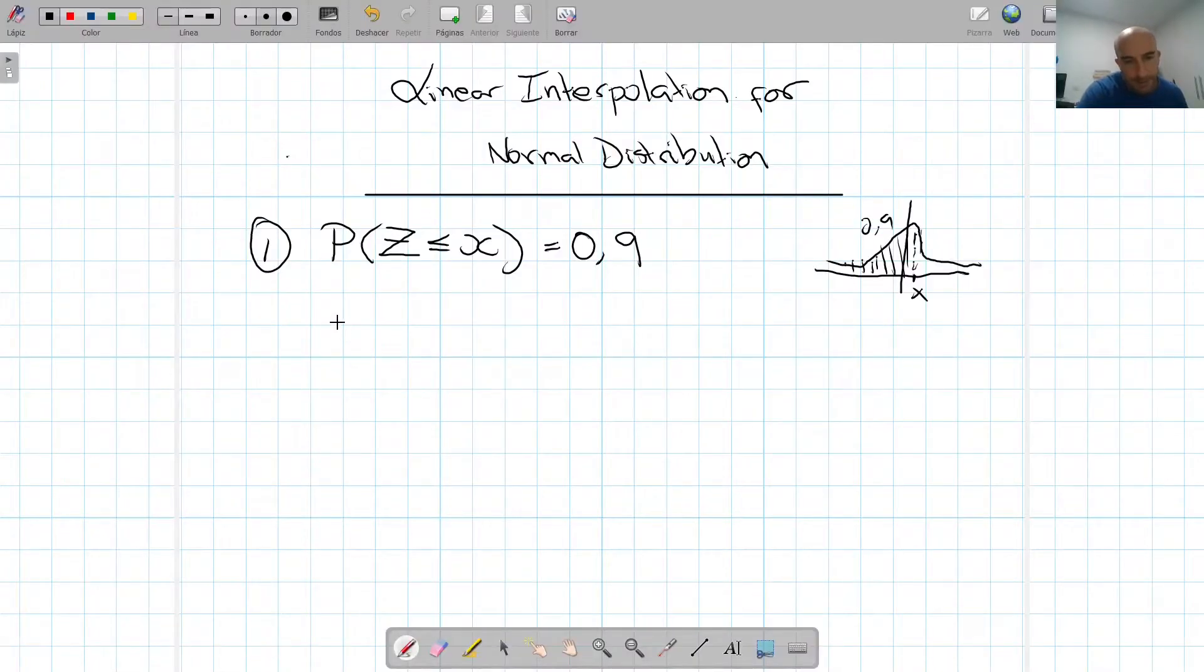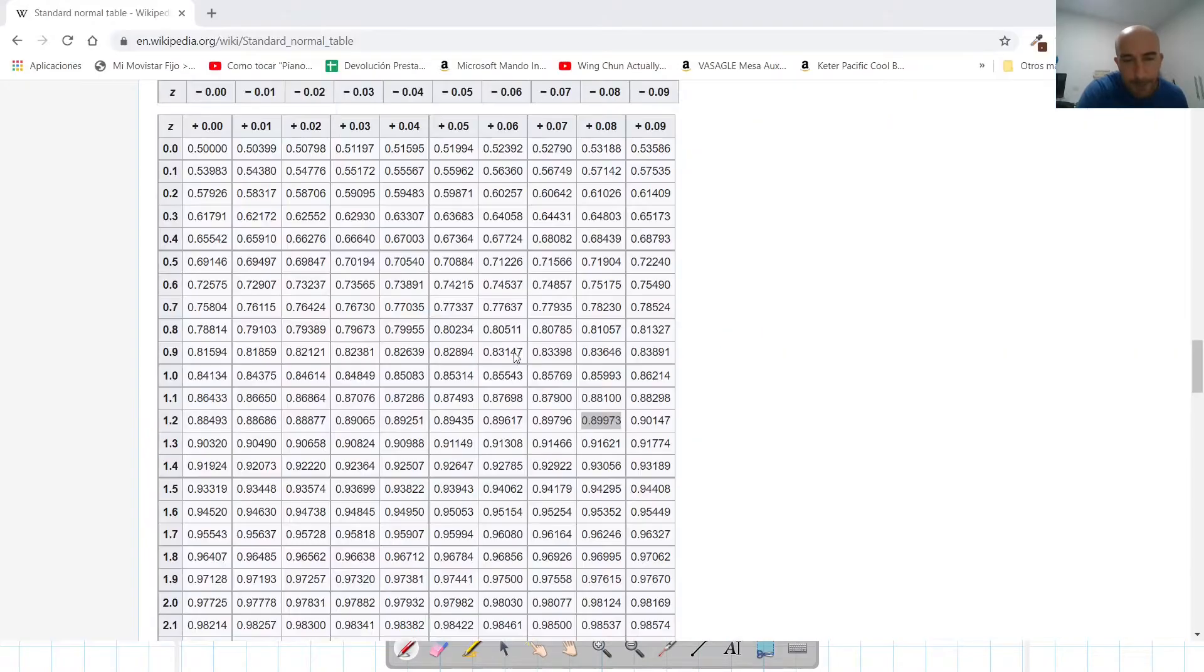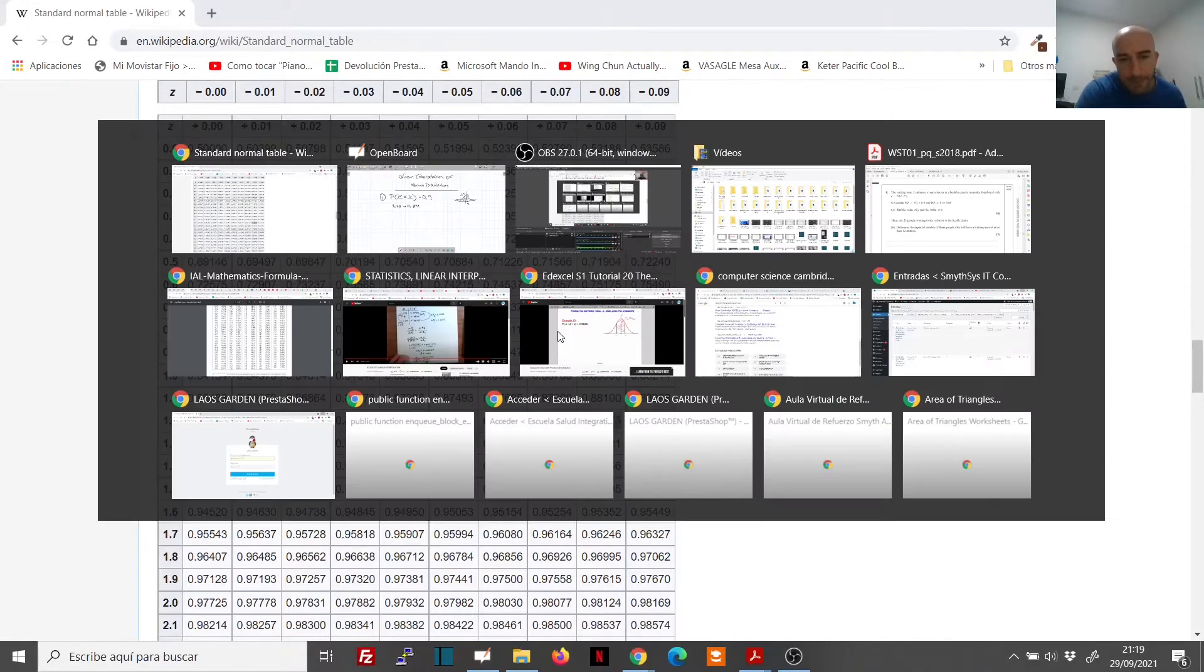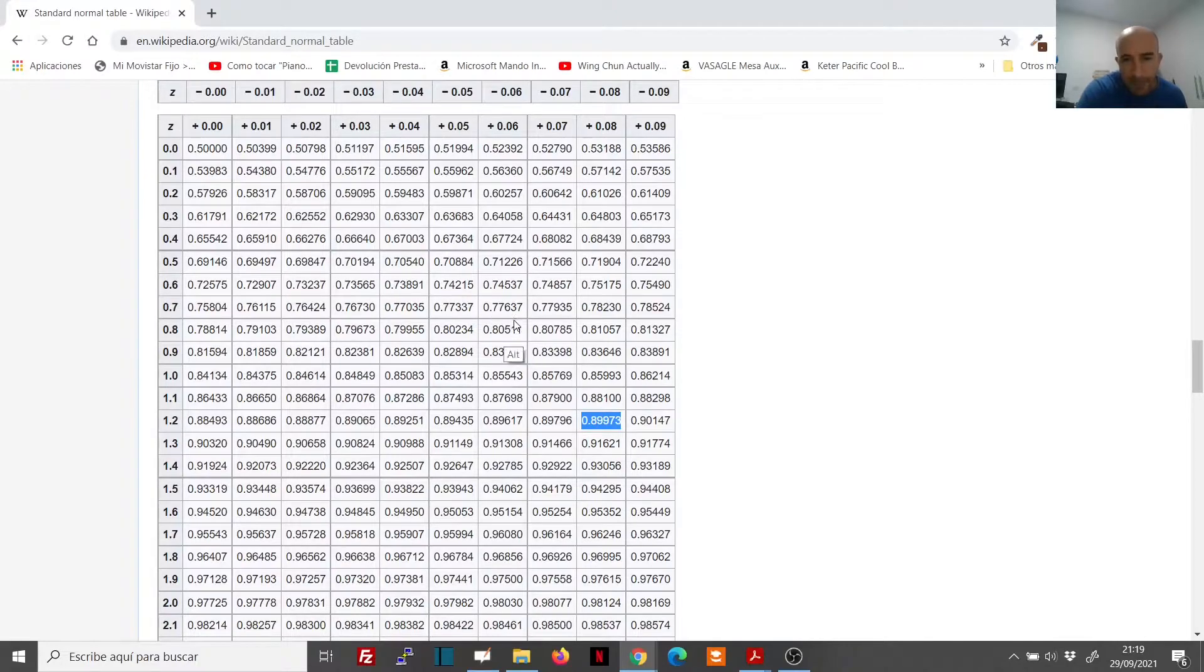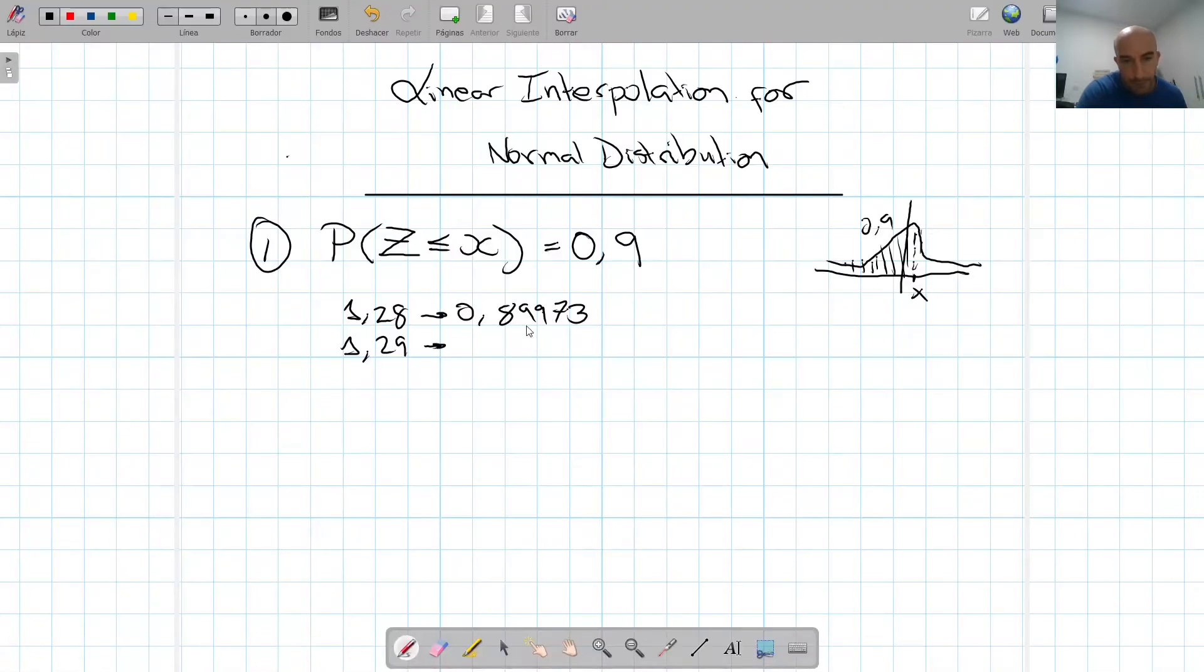We have that the 1.28 gives us 0.89973, and 1.29 gives us 0.90147. So our 0.9 must be somewhere in between. But it's not exactly in the middle, because as you see, the difference is not the same.